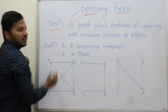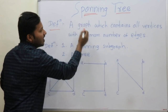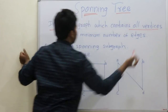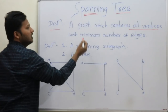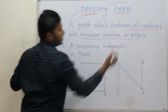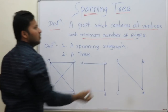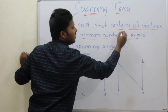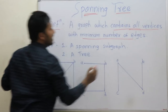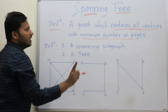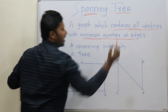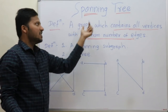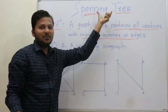The definition is: a graph which contains all vertices with minimum number of edges. These are the two conditions — contains all vertices and minimum number of edges — and such a graph is called a spanning tree.